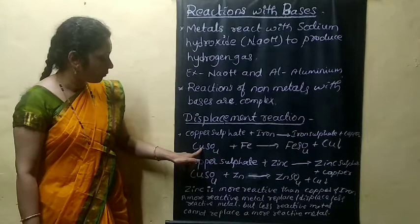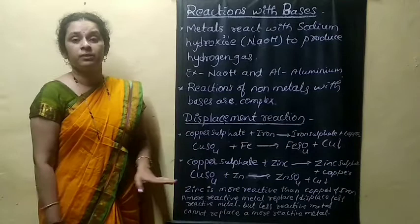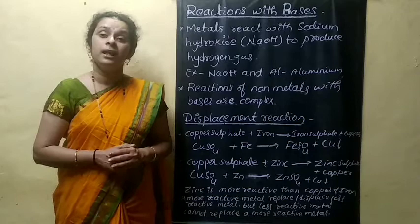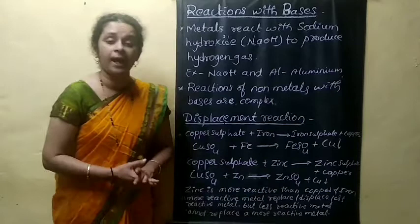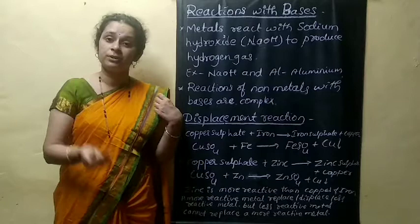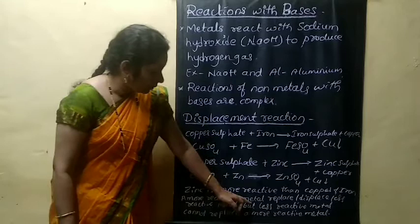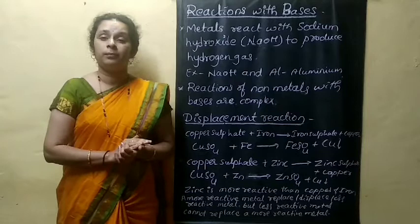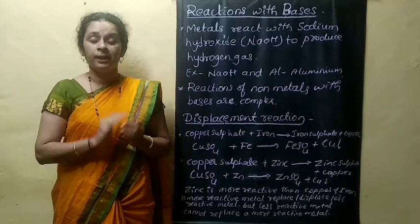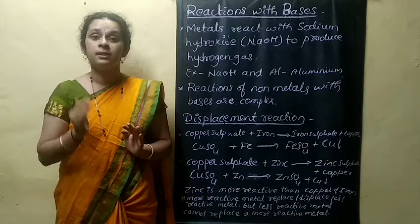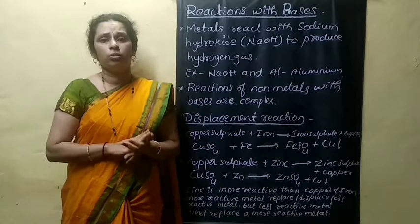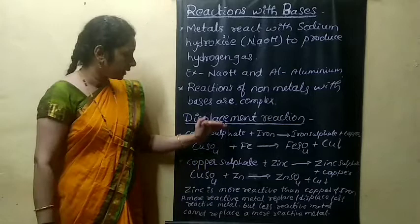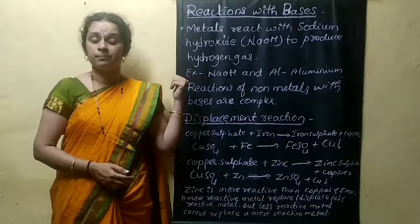In chemical displacement reaction, more reactive metal displaces or replaces less reactive metal from their aqueous solution or compounds. Zinc is more reactive than copper and iron. When compared to zinc, magnesium is more reactive. A more reactive metal replaces a less reactive metal, but a less reactive metal cannot replace a more reactive metal. That is the main principle of chemical displacement reaction.